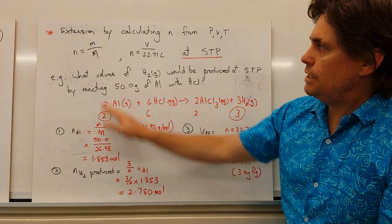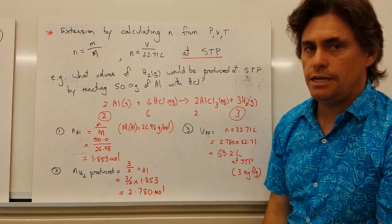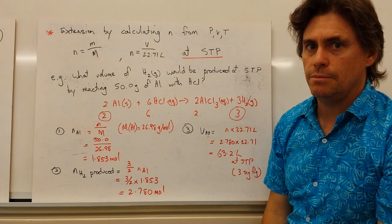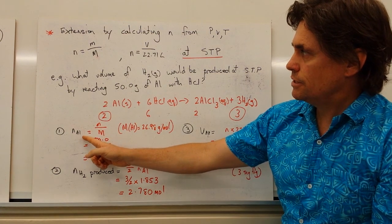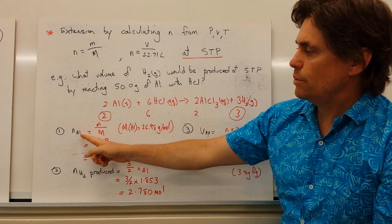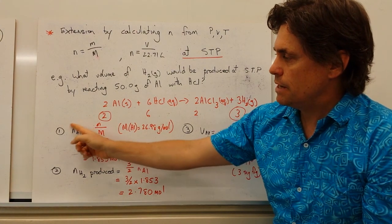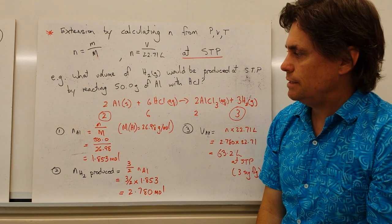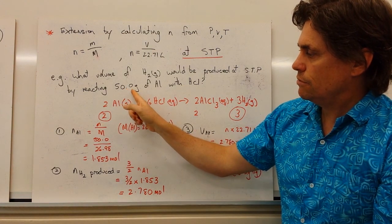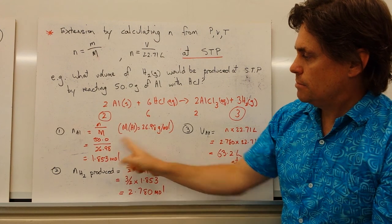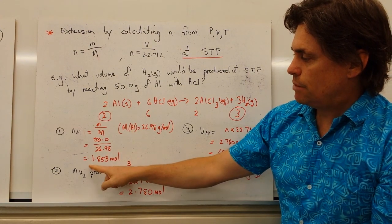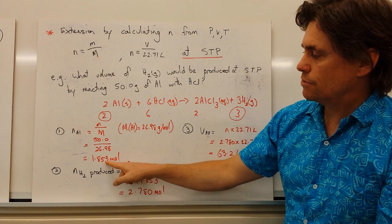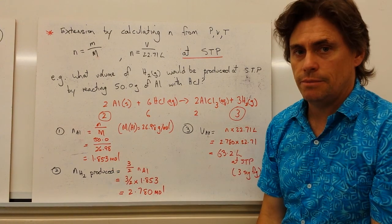So the first thing we have to do is use this particular equation here to calculate the number of moles of aluminium that have been reacted. So if we write this equation down, we're looking for the number of moles of aluminium that are reacting. We get the mass used, 50.0 grams, divided by the molecular weight of the aluminium, 26.98. And we find that we have 1.853 moles of aluminium reacted.